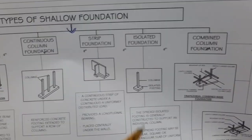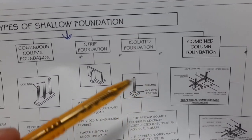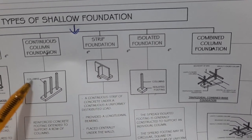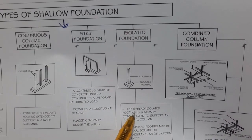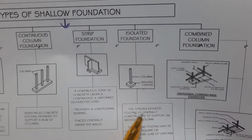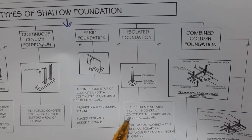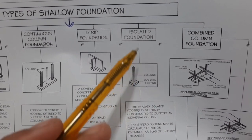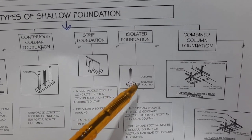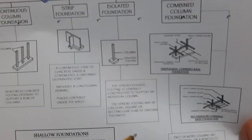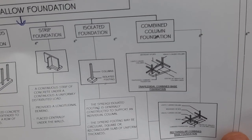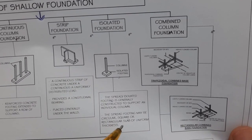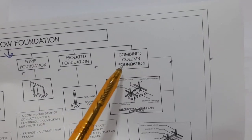The next type is isolated footing, also called individual footing. This footing is generally constructed to support an individual column only — for one column we design an isolated footing. On top of the footing you can provide a circular, square, or rectangular column, or a slab of uniform thickness.